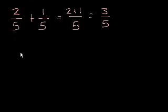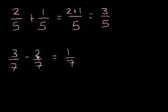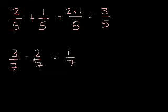It works the same way with subtraction. If I had 3/7 minus 2/7, that just equals 1/7. I just subtracted 2 from 3 to get 1, and kept the denominator the same. If I have 3 out of 7 pieces of a pie and I give away 2 out of 7 pieces, I'd be left with 1 of the 7 pieces.